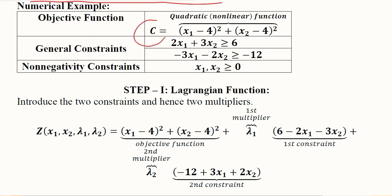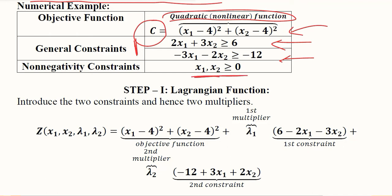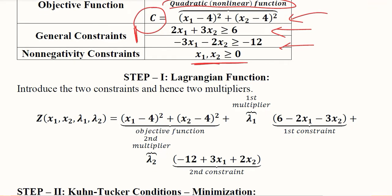The objective function is a cost function depending on two inputs x1 and x2. It is nonlinear, so nonlinear programming is needed, and it has multiple constraints, confirming that nonlinear programming is the suitable tool. There is a quadratic function along with the constraints. One constraint and another constraint are given, and non-negativity constraints are also present because positive values are expected for the inputs.